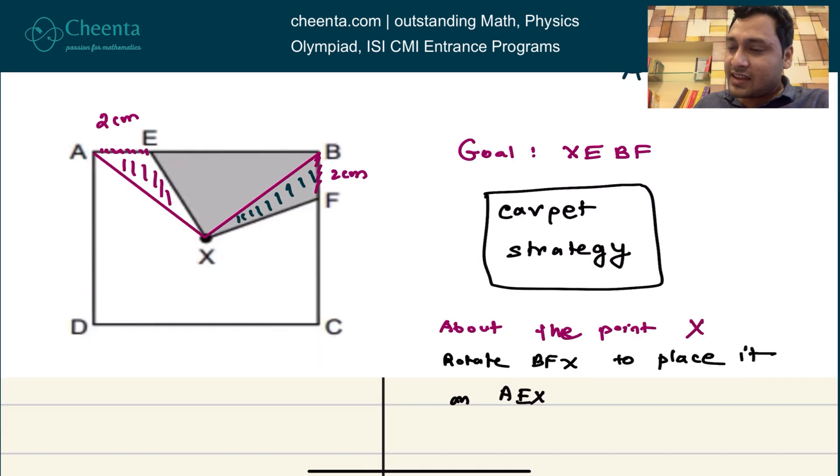You can rotate the triangle BFX so that it exactly falls on AEX. In the comment section, can you tell me what should be the angle of rotation? Maybe you can tell me that in the comment section.